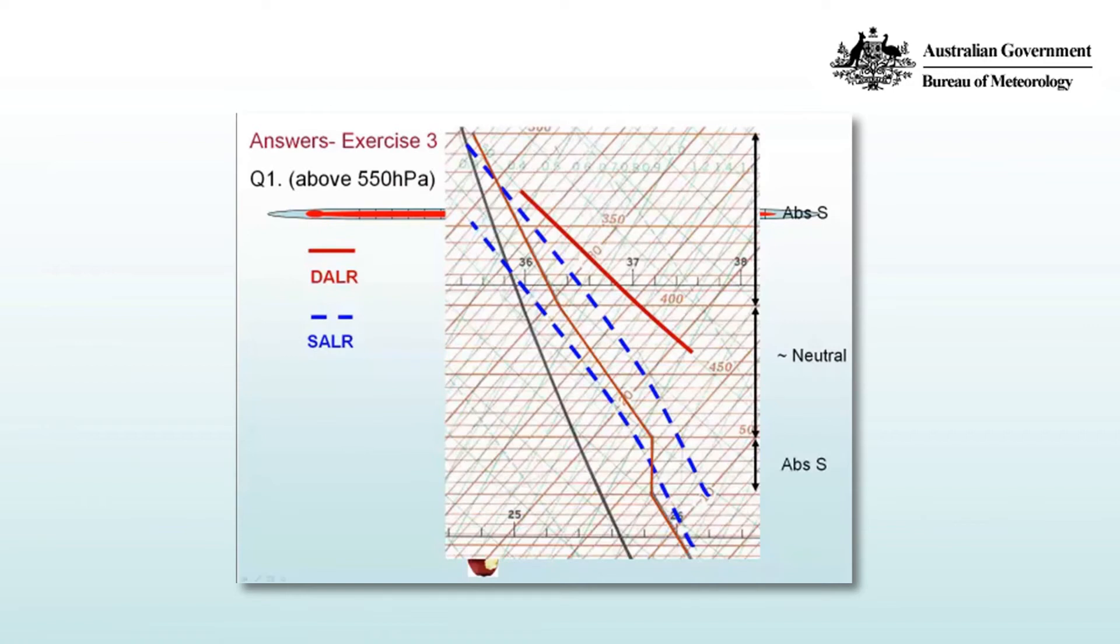For the upper part of the atmosphere we see an absolutely stable layer, then an approximately neutrally stable layer where the temperature lapse rate is about that of a saturated adiabat. Finally, the top of the atmosphere is absolutely stable.